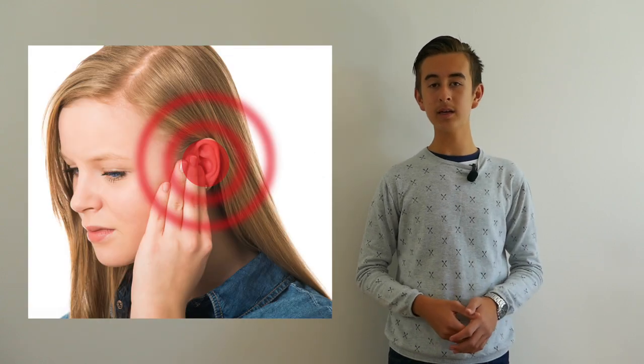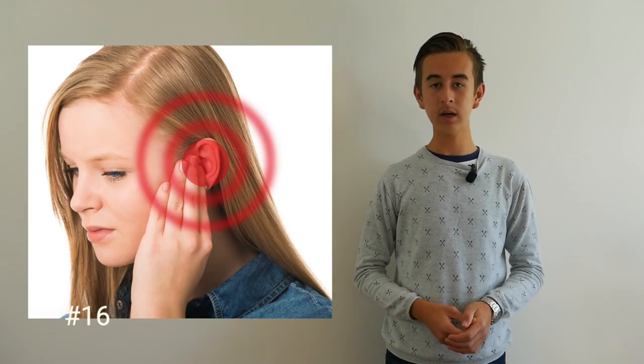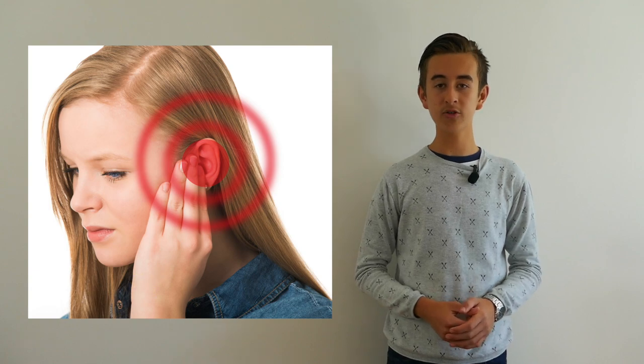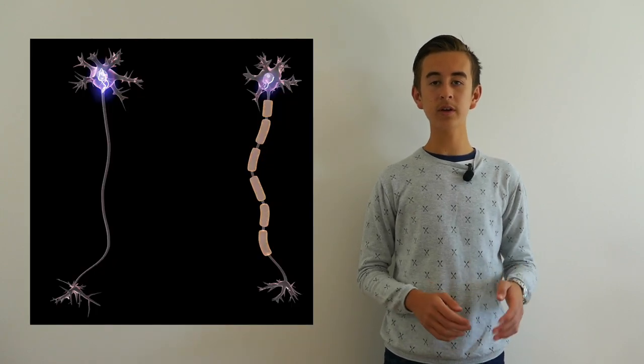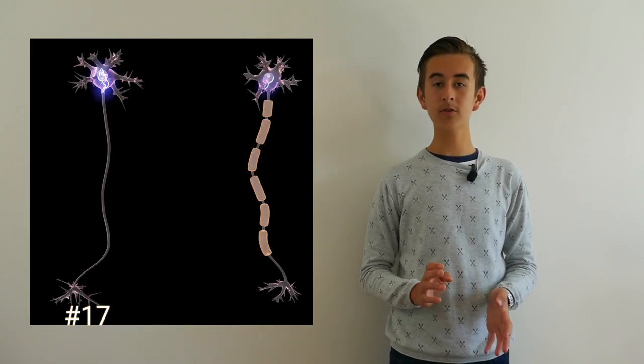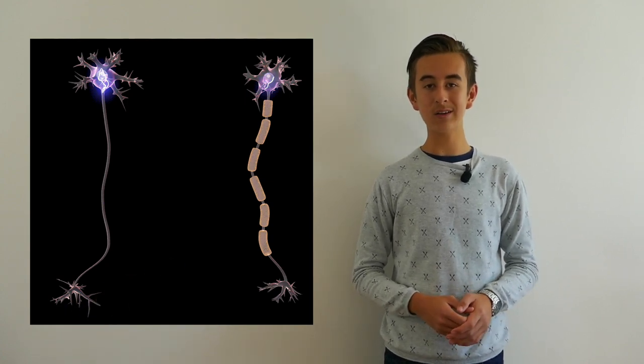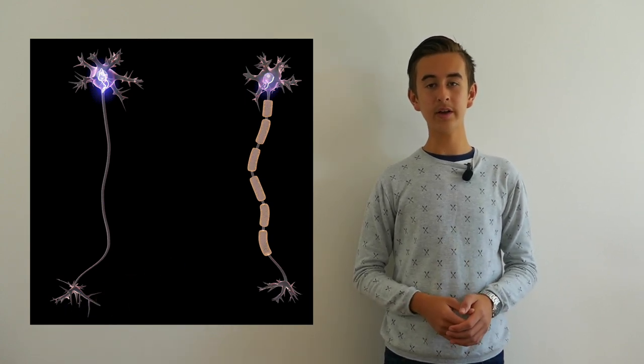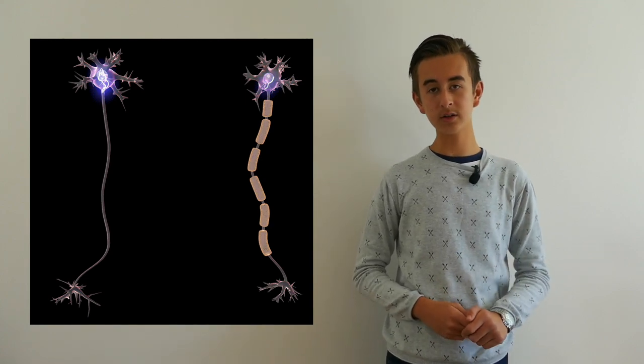Scientists believed for many years that tinnitus was a function of the mechanics of the ear. But new research shows there's actually a function of the brain. Information from sensory nerves can be sent to the brain from 0.5 meters per second to 120 meters per second, or 20 inches per second to 131 yards per second.